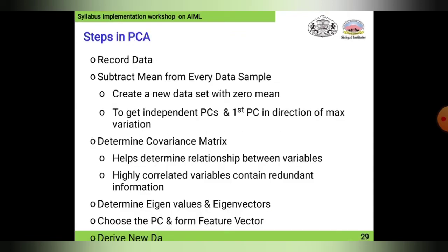Steps in PCA: First, record data. Second, subtract the mean from every data sample, which consists of creating a new data set with zero mean to get independent PCs. First PC is in the direction of maximum variation. Third, determine the covariance matrix, which helps determine the relationship between variables. Highly correlated variables contain redundant information.